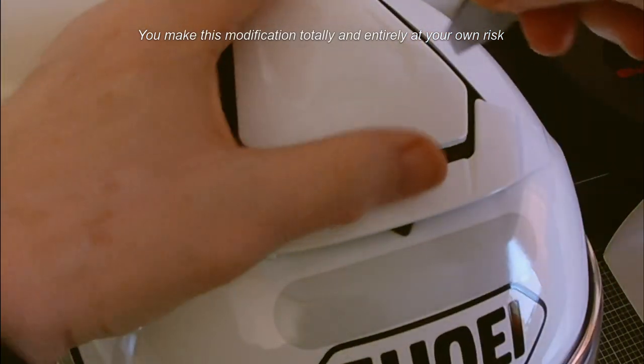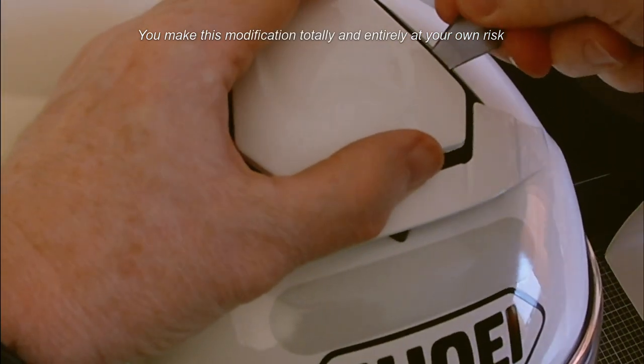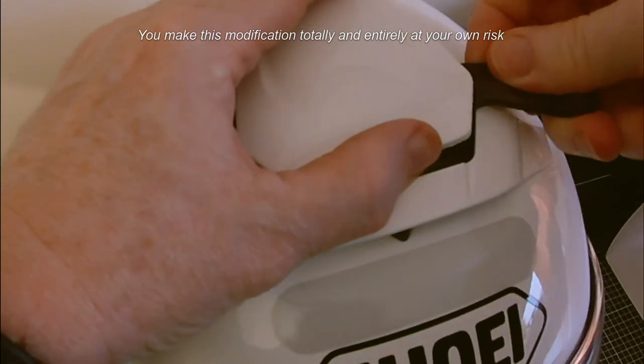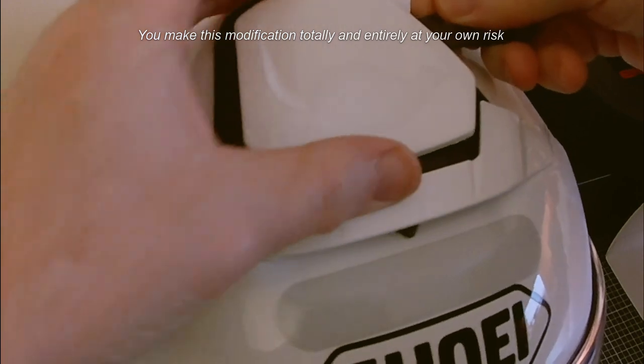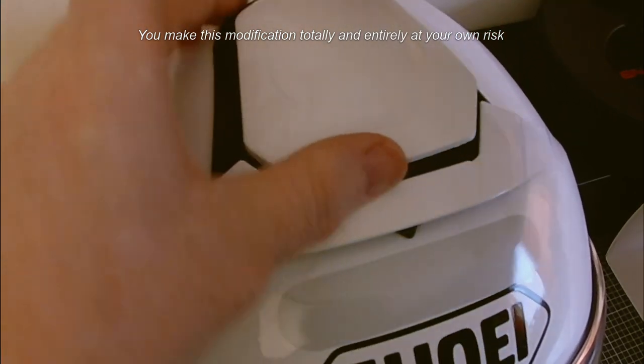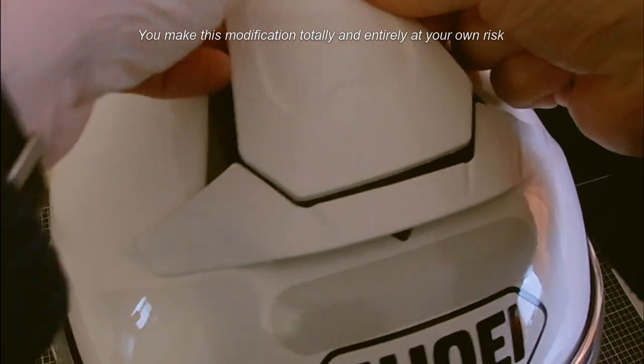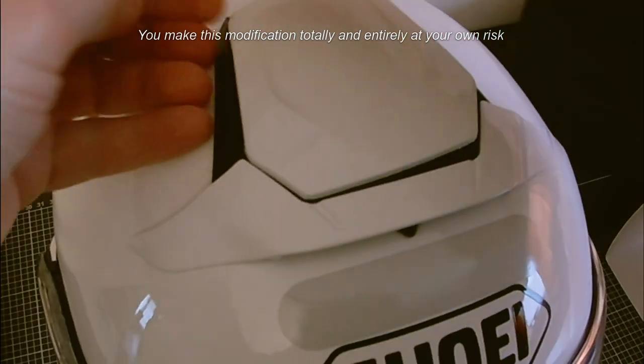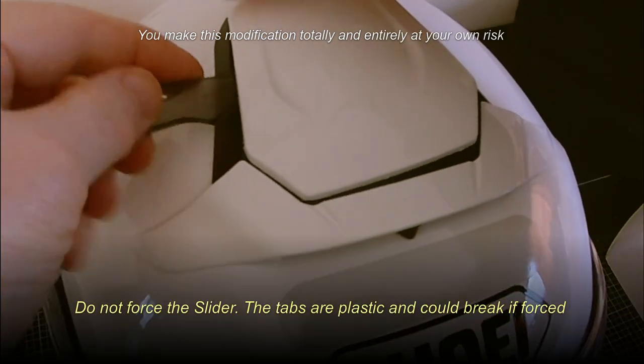Then, using the Shoei helmet tool, just lever the edge and first of all at the back it'll click up. And then, once you've got the back released, you need to move it forward and then towards the rear of the helmet. This is the top vent piece towards the rear of the helmet.